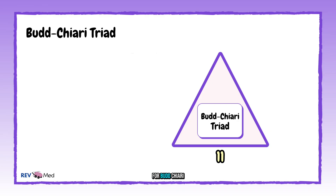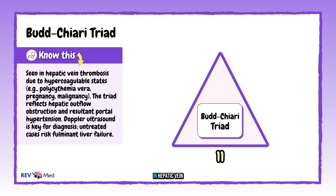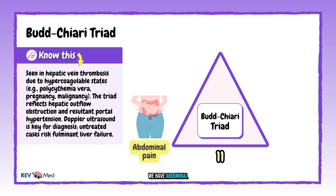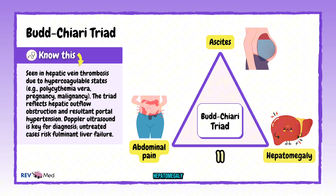Number eleven: Budd-Chiari triad, seen in hepatic vein thrombosis. We have abdominal pain, ascites, and hepatomegaly, often caused by hypercoagulable states like polycythemia vera.